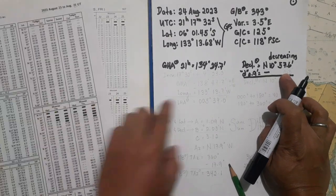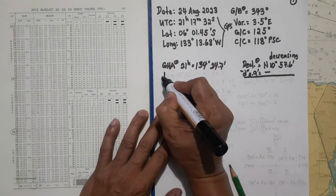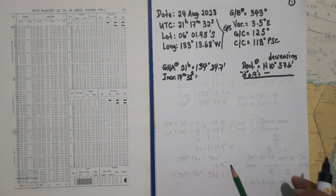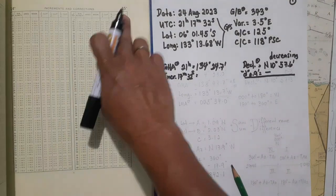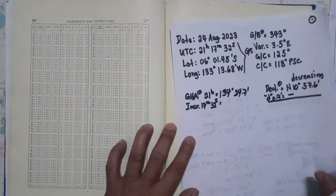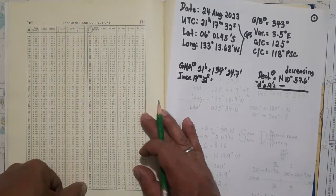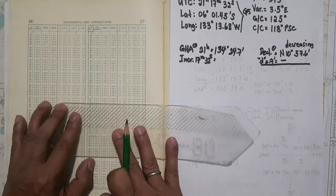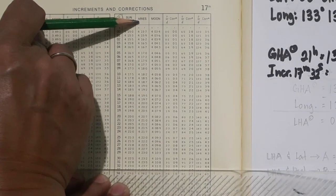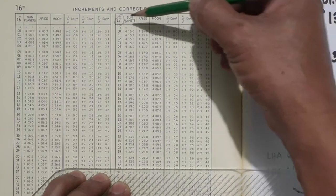Now we will go to our increments. The GHA value is for August 24 at 21 hours only, but we still have 17 minutes and 32 seconds, so we need to find the GHA increment for 17 minutes and 32 seconds from the increments table — the yellow pages. We go to 17 minutes. For 32 seconds, under the column for sun and planets since our celestial body is the sun, the value is 4 degrees 23.0 minutes. So we write 4 degrees and 23 minutes.